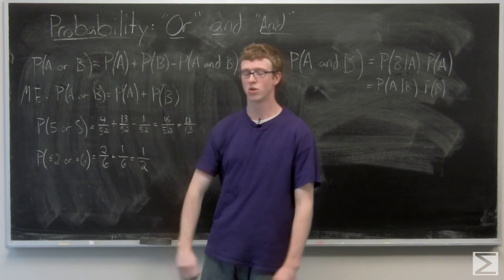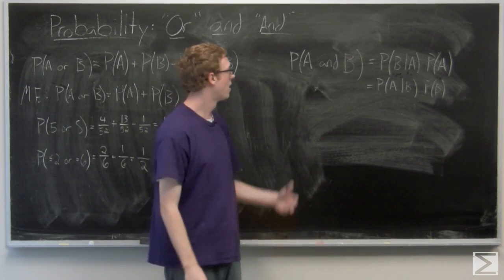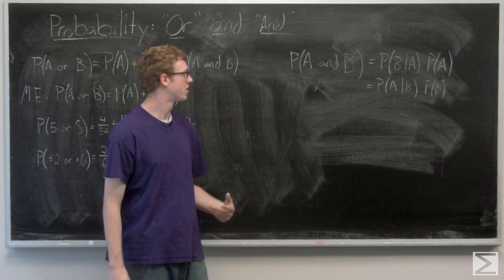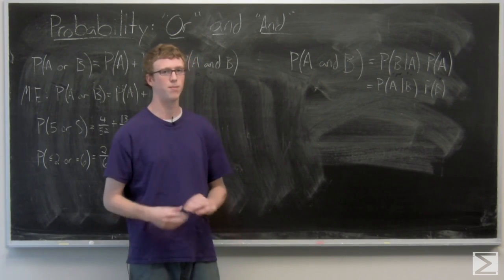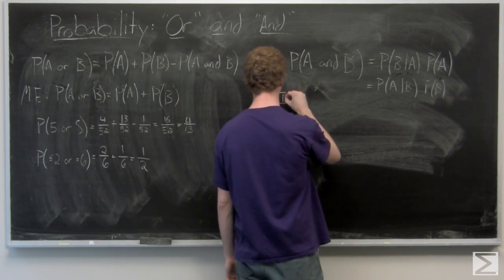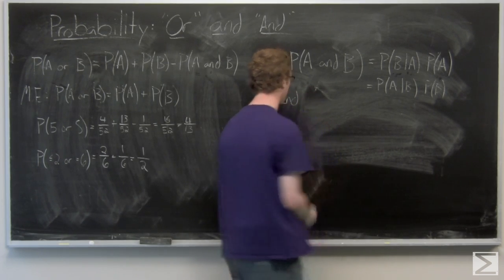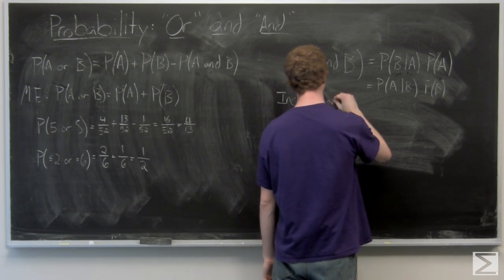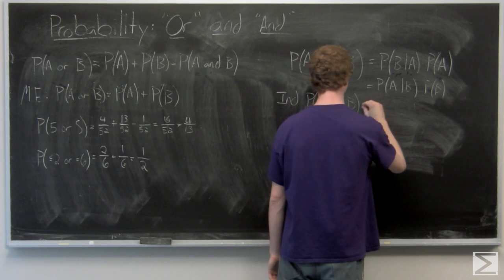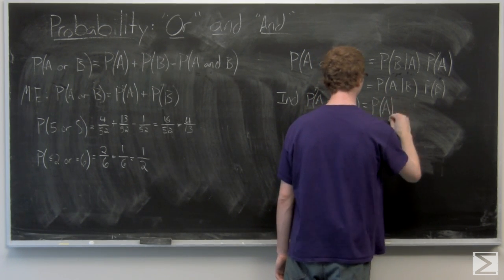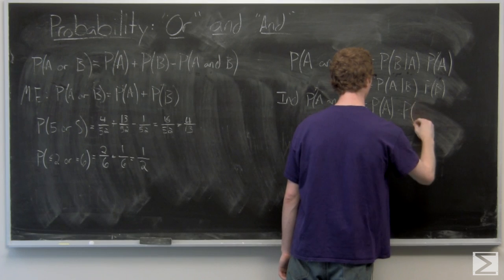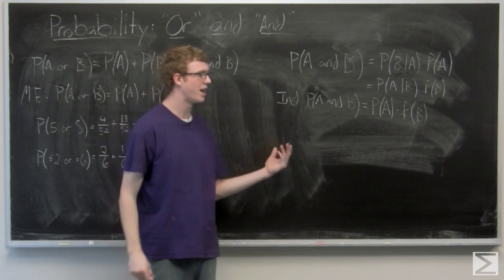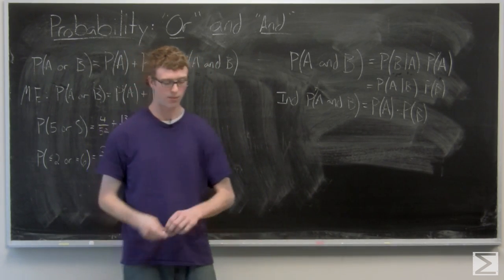We're going to have a special case here, just like the mutually exclusive case for OR. We're going to look at when A and B are independent — meaning that one doesn't affect the other. So whether or not you get A has no effect on whether or not you get B. For independent events, abbreviated I and D, the probability of A and B is just the probability of A times the probability of B.